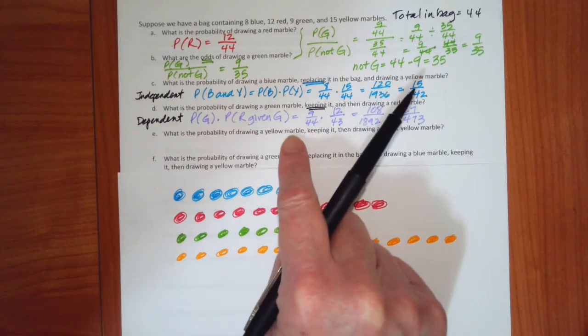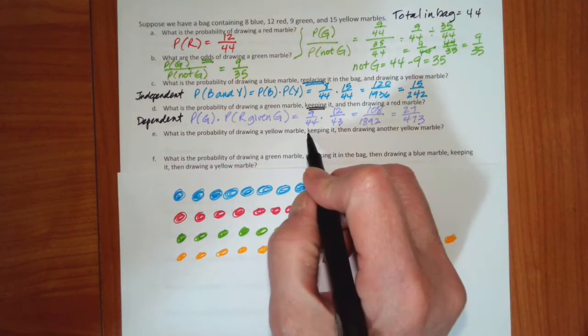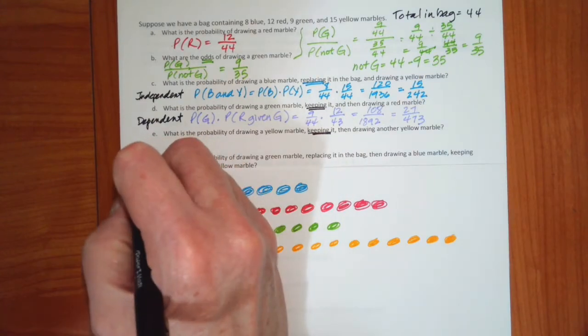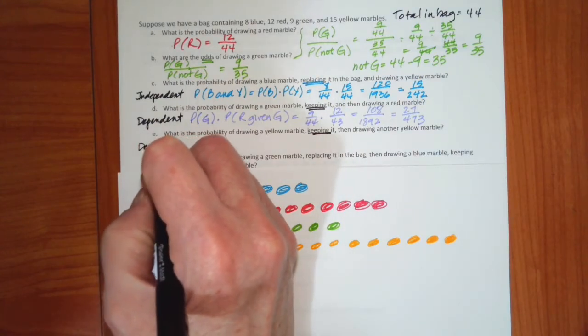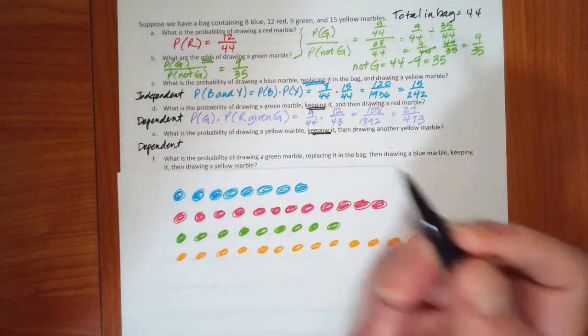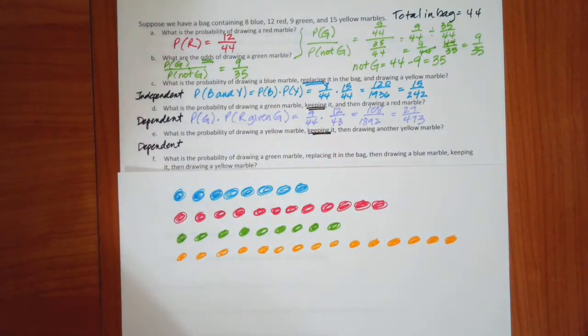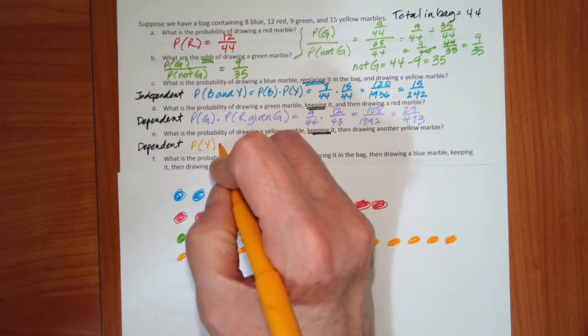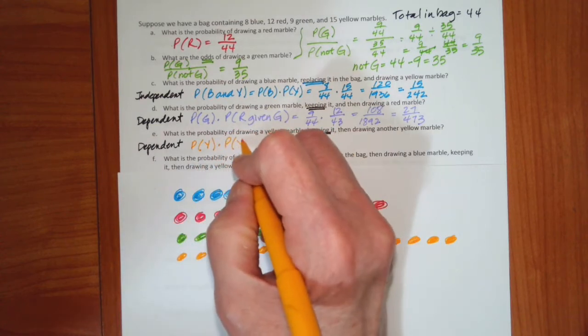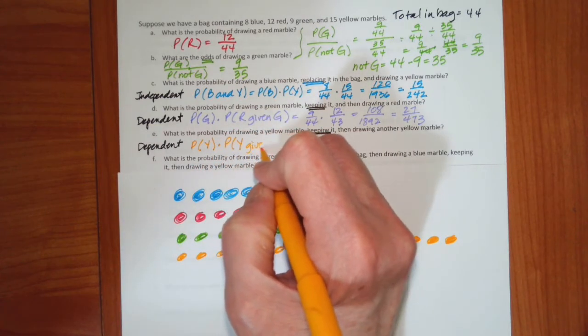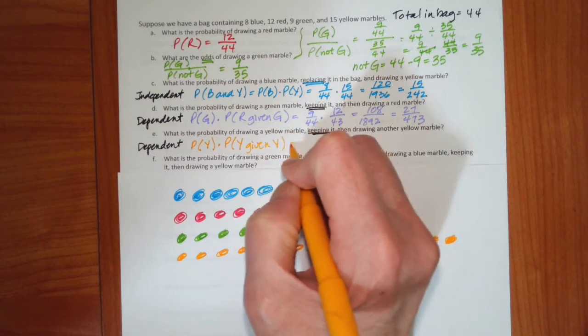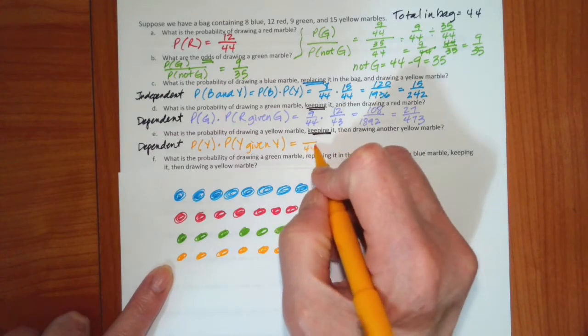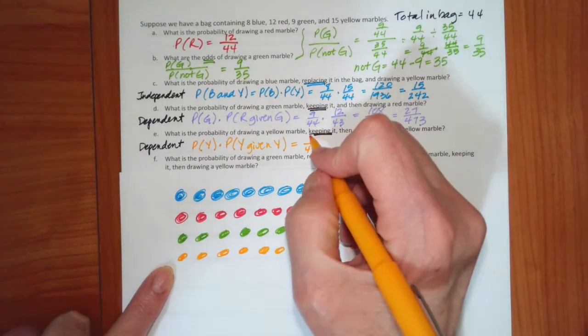Alright, what is the probability of drawing a yellow, keeping it, and then drawing another yellow. Once again, this is dependent. So what I want to do is find the probability of a yellow, and then find the probability of a yellow given a yellow. Well, if I start with my original 44 marbles, I have 15 yellow.